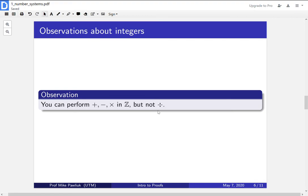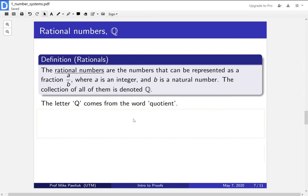So how can we fix that? How can we make it so that we are able to do division in addition to these three operations? Well then we introduce the rational numbers. So the rational numbers are the numbers that can be represented as a fraction a over b, and we'll insist that the numerator, so the top part, is an integer, and the bottom part, the denominator, is a natural number. So integer on top, natural number on bottom. And we'll denote the collection of all of these using Q. Q here stands for quotient.